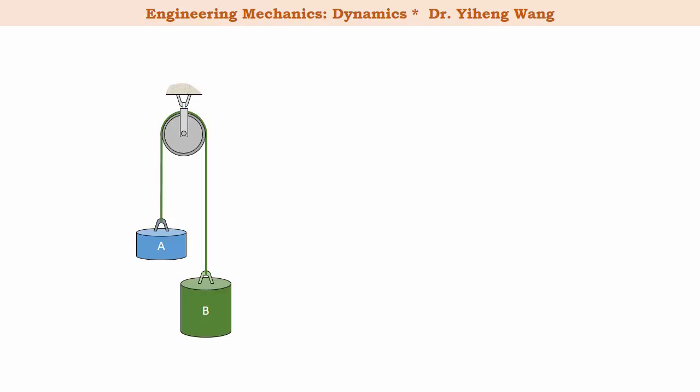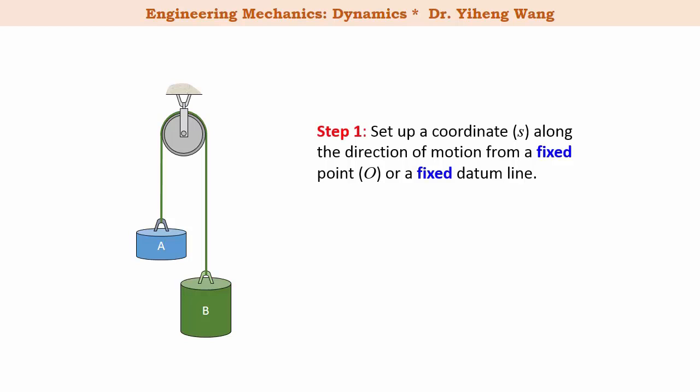First step, just like what we learned before for rectilinear motion, we need to set up a coordinate system in order to represent the position of the particles. So we choose a fixed point to be the origin, and choose downward to be positive position. But for this type of problem involving pulley systems, it's more convenient to draw a datum, which is a line that any point on it represents a position of zero.